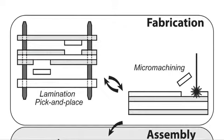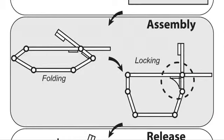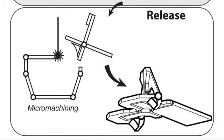While fabrication allows us to create complicated flat structures, pop-up folding and locking allows us to assemble these flat structures into three-dimensional machines, similar to a pop-up book. A release step completes the machine by removing any extraneous components.